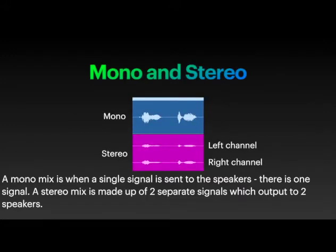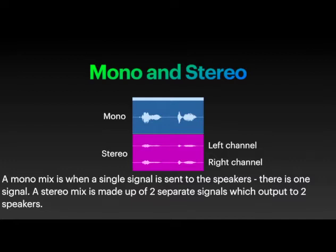Before we go anywhere, we need to understand mono and stereo files. A mono file is when a single signal is sent to the speakers — you can see there is only one signal being sent through. A stereo file, shown in pink or purple, is made up of two separate signals: the top goes to the left channel and the bottom to the right. Most of our music is mixed to stereo, because we have two ears and listen on headphones or hi-fi speakers. Some content is mixed in 5.1 or 7.1 with speakers all the way around you, but most music is mixed to stereo.